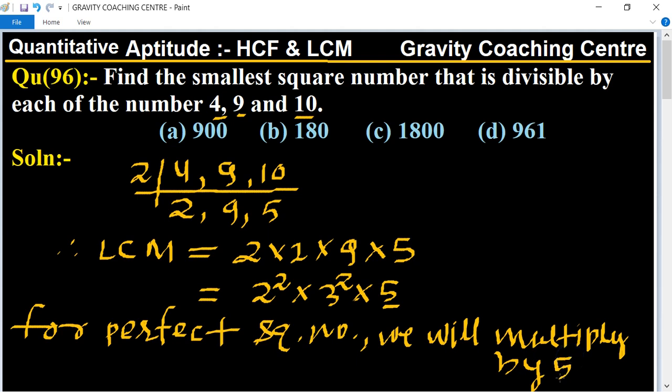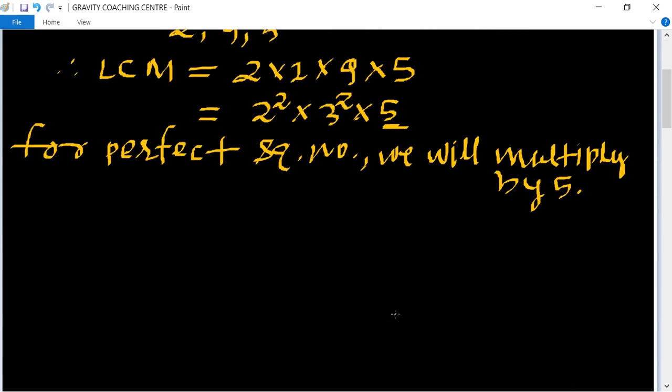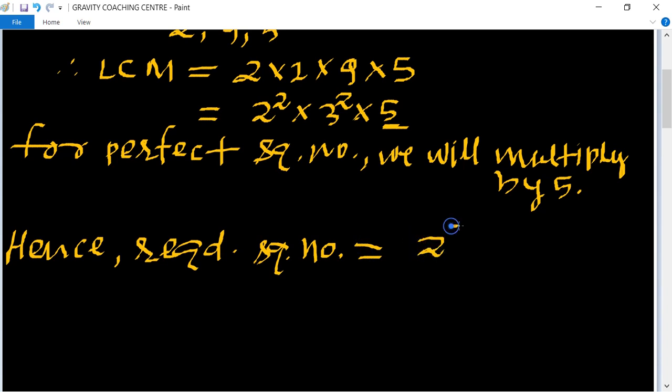Because 5 is not in pair. Hence, the required square number equals 2 squared times 3 squared times 5 squared.